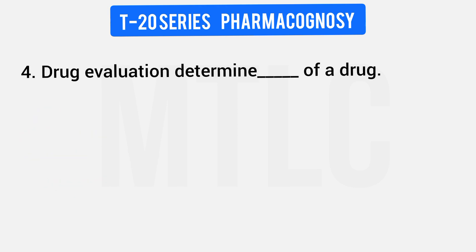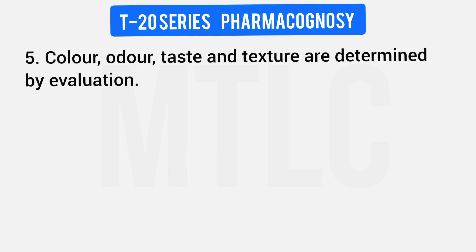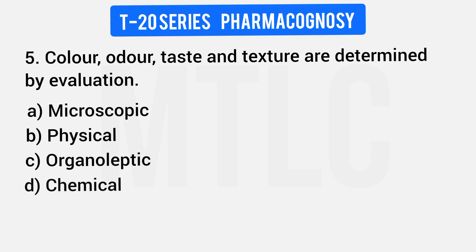Drug evaluation determines the quality and identity of a drug. The answer is both quality and identity. Next question: Color, odor, taste, and texture are determined by which type of evaluation? Options: Microscopic, Physical, Organoleptic, Chemical. Color is seen, odor is felt by the nose, taste by the tongue, and texture by the skin — that is why this is organoleptic evaluation.